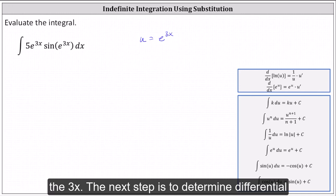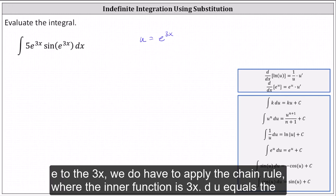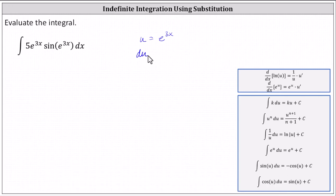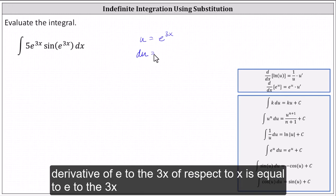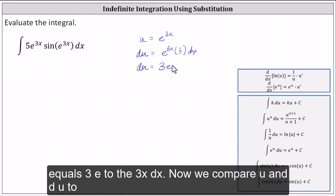The next step is to determine differential u. Differential u equals the derivative of u with respect to x times dx. Notice to differentiate e to the 3x we do have to apply the chain rule where the inner function is 3x. du equals the derivative of e to the 3x with respect to x, which is equal to e to the 3x times the derivative of 3x, which is 3, times dx. Let's write this as du equals 3 e to the 3x dx.